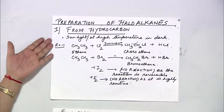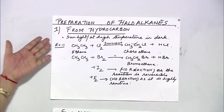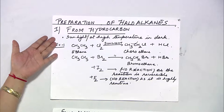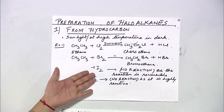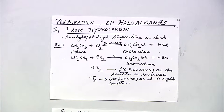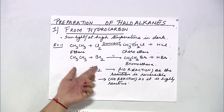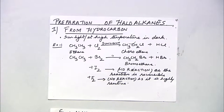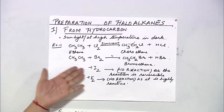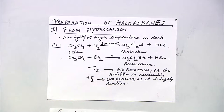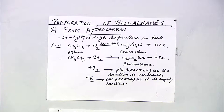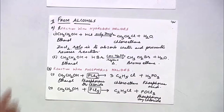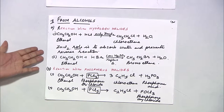Haloalkanes can be prepared from hydrocarbons. Ethane reacting with chlorine in the presence of sunlight gives chloroethane; with bromine you form bromoethane. With iodine there is no reaction as it is reversible, and fluorine does not react at all because it is highly reactive.